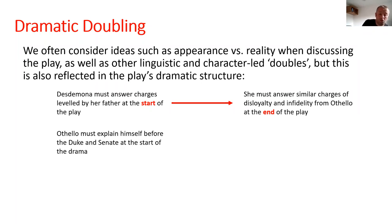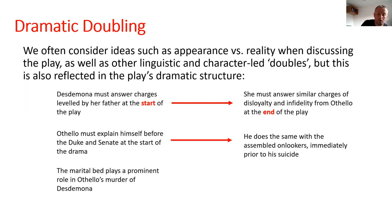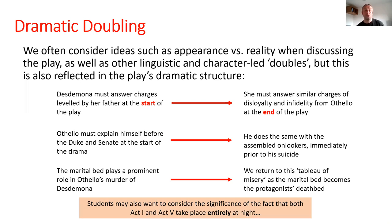We have Othello explaining himself to the Duke and Senate at the start of the drama, and then he does the same with the assembled onlookers immediately prior to his suicide. The marital bed plays a prominent role in the murder of Desdemona, then we return to what I've called the 'tableau' — the marital bed becomes the protagonist's deathbed. Students might also consider the significance of the fact that both Act One and Act Five take place entirely at night. I don't think that's accidental — the play is bookended by two incredibly interesting sections, both set at night but for very different reasons.